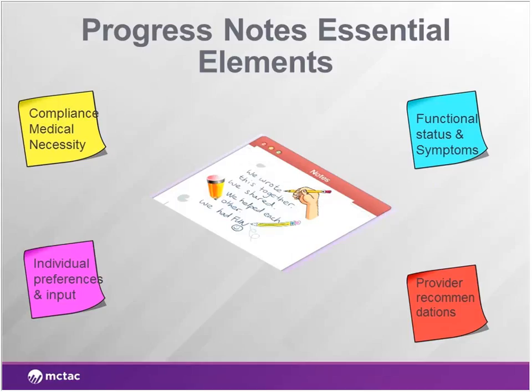The easiest way to frame the essential elements in the progress note is to look at it from four perspectives. There's a piece that requires compliance and medical necessity information. There's also the functional status and symptoms of the individual or family being treated. We also want to make sure we include the family's or individual's preferences and their input, relayed through the notes. And we also want to remember that the provider has certain expertise and training, and we're incorporating that into the note as well.